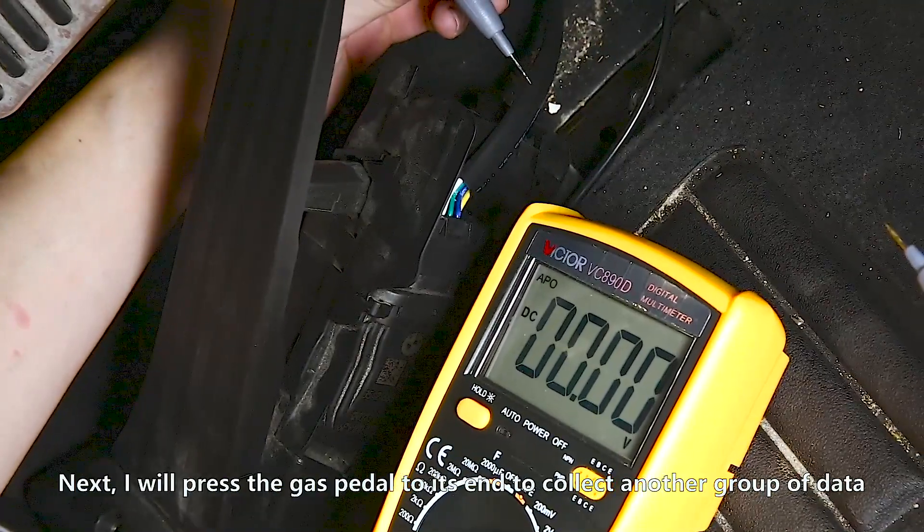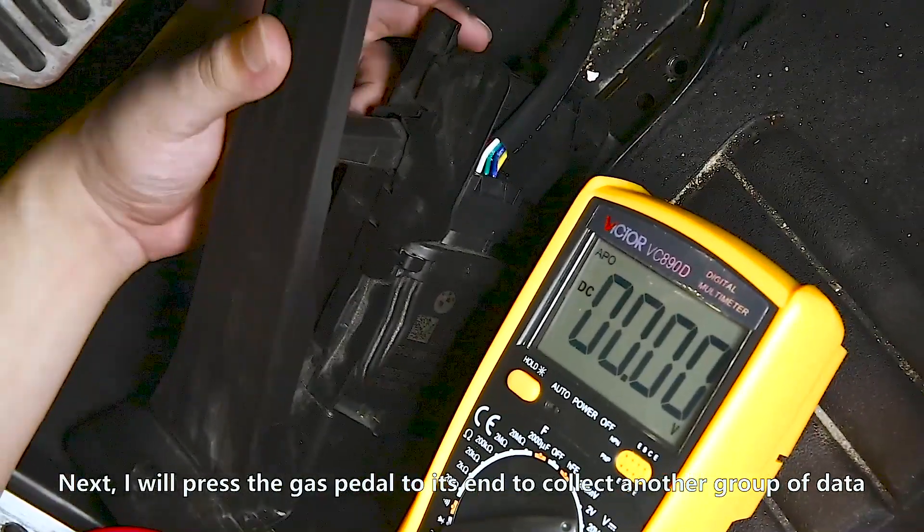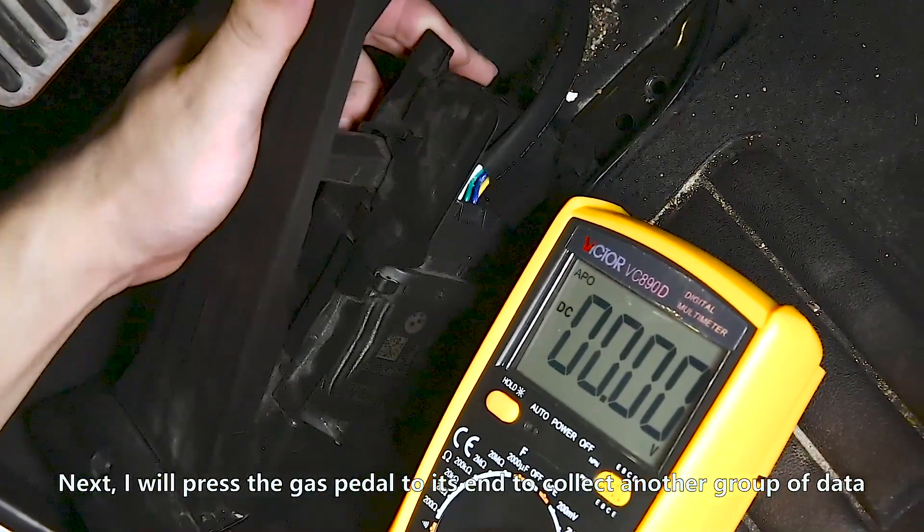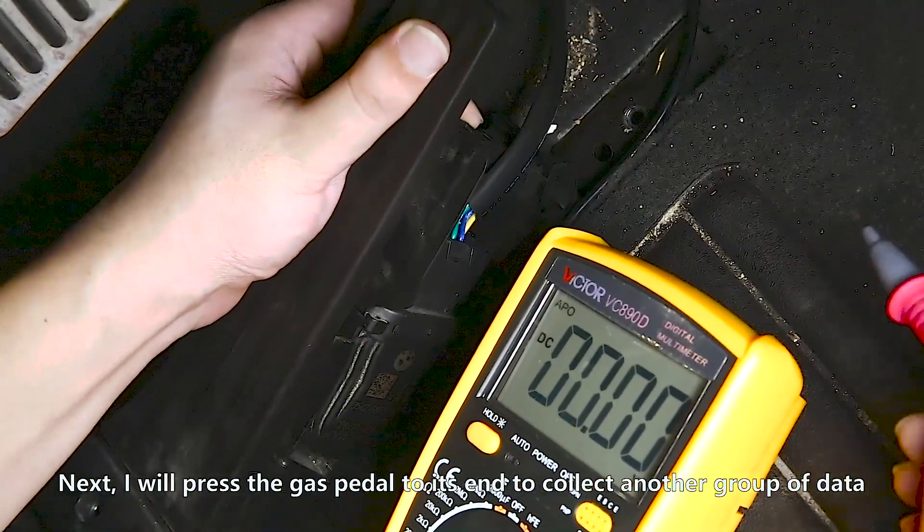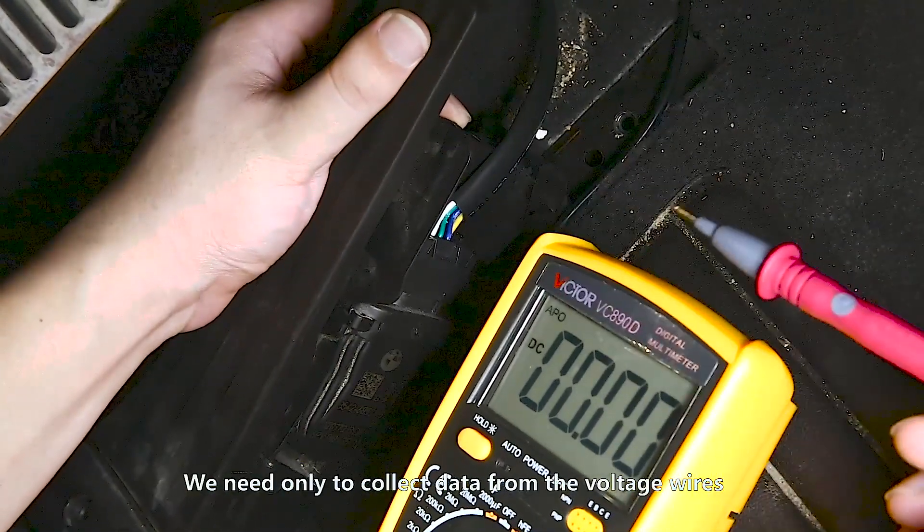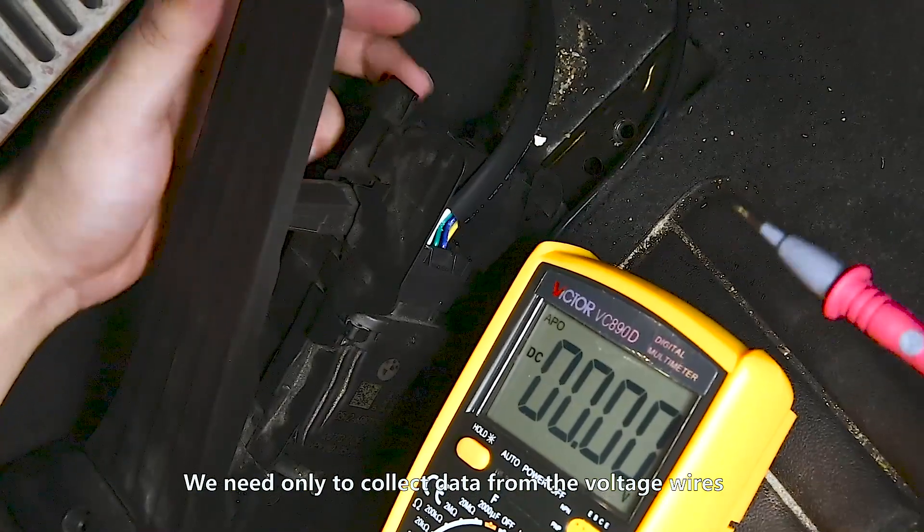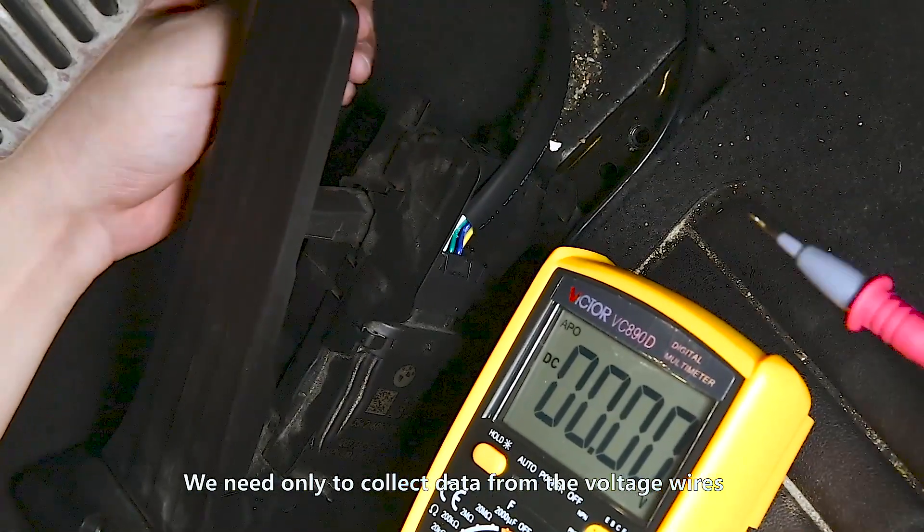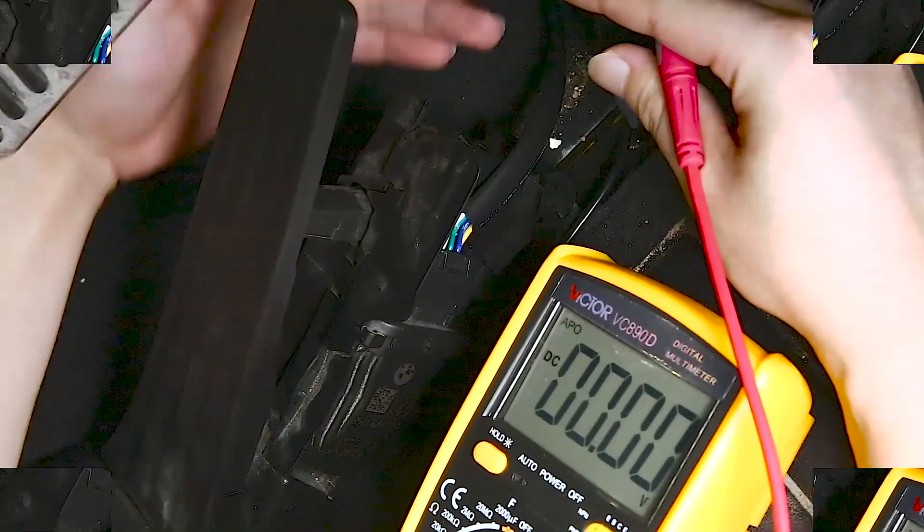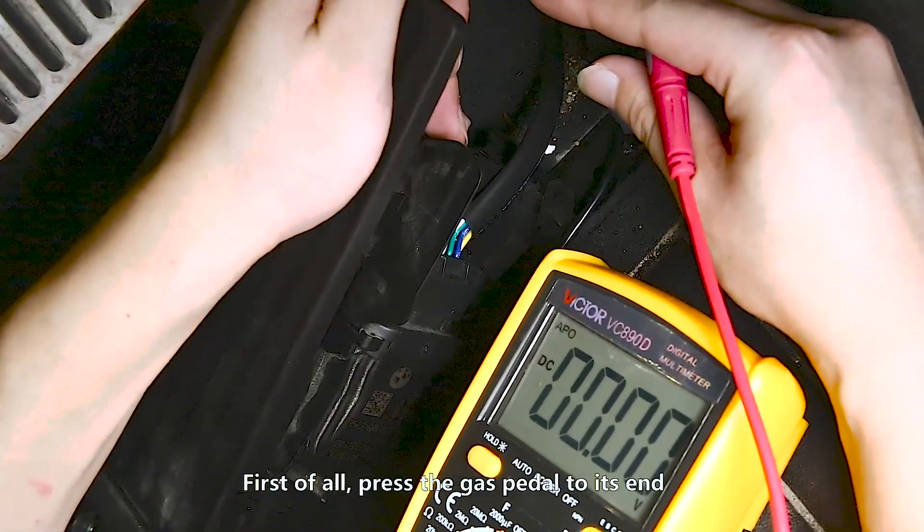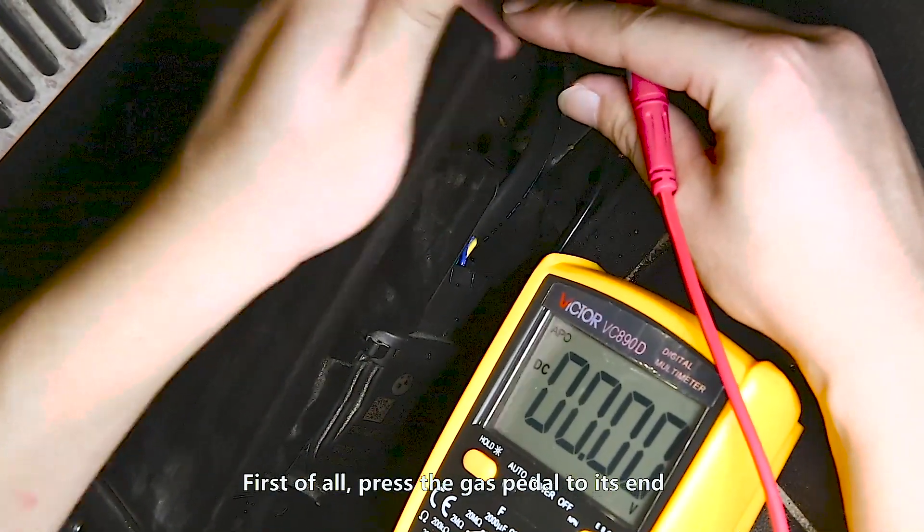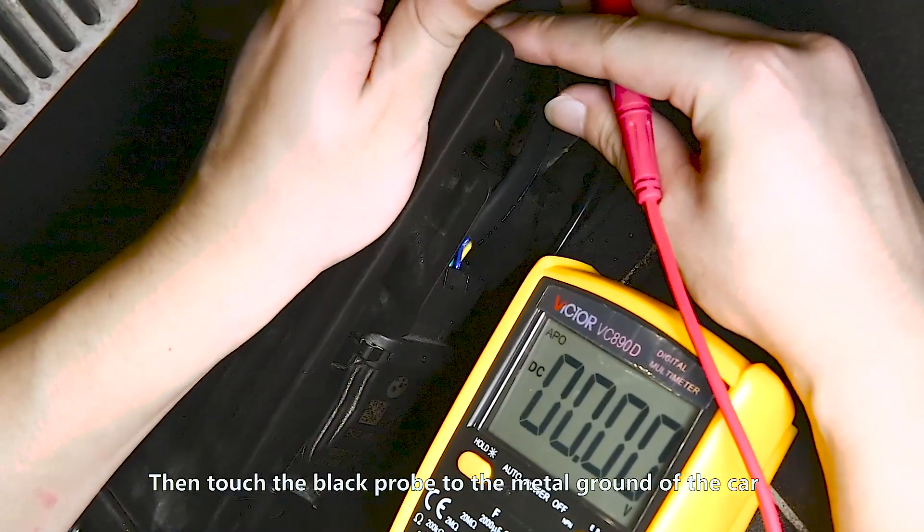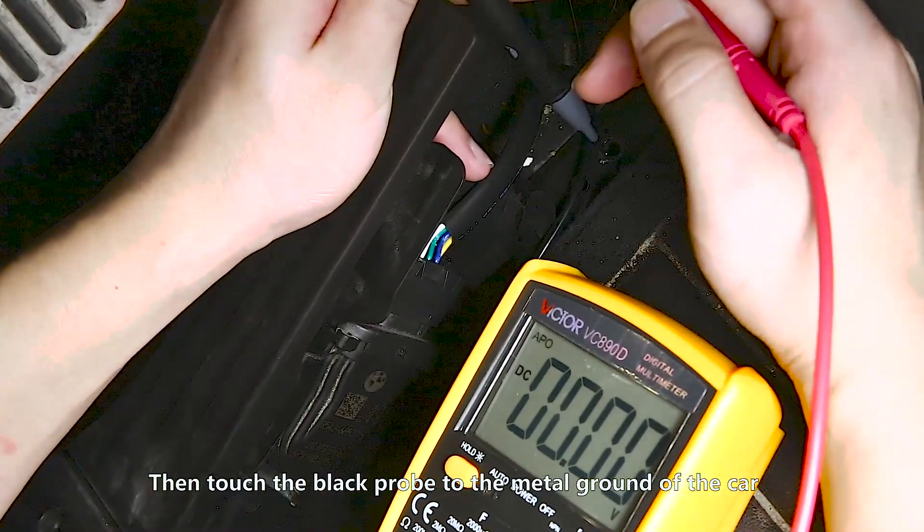Next, I will press the gas pedal to its end to collect another group of data. We need only to collect data from the voltage wires, the blue one and the white one. First of all, press the gas pedal to its end, then attach the black probe to the metal ground of the car.